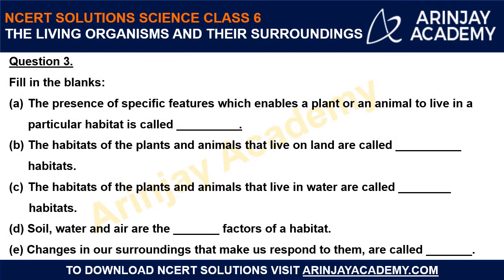Question 3: Fill in the blanks. The first statement: the presence of specific features which enables a plant or an animal to live in a particular habitat is called — adaptation. Different plants and animals have been modified with special features with the presence of which they can live in a particular habitat, and this is called adaptation.